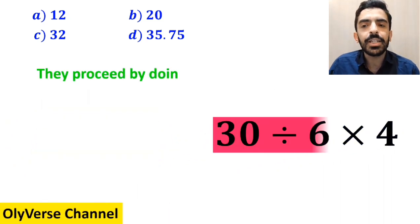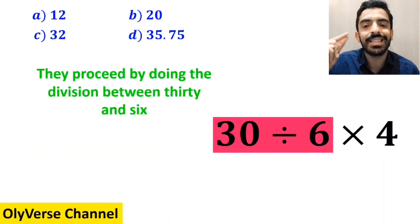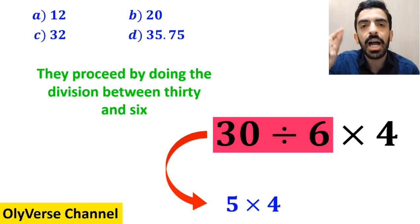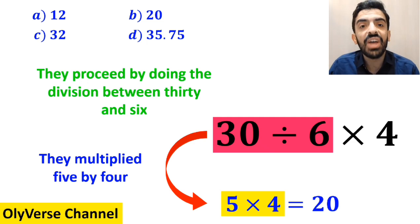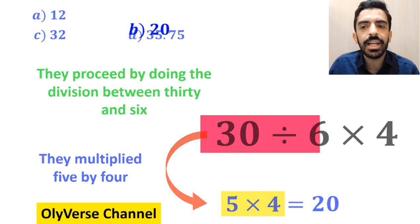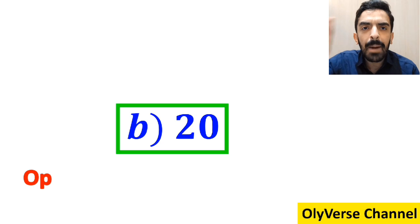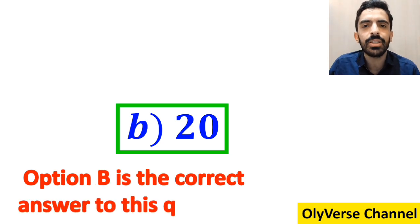Then they proceed by doing the division between 30 and 6, which gives them 5 times 4, and finally they multiply 5 by 4, which ends up with the answer 20. Then without hesitation, they quickly say that option B is the correct answer to this question.